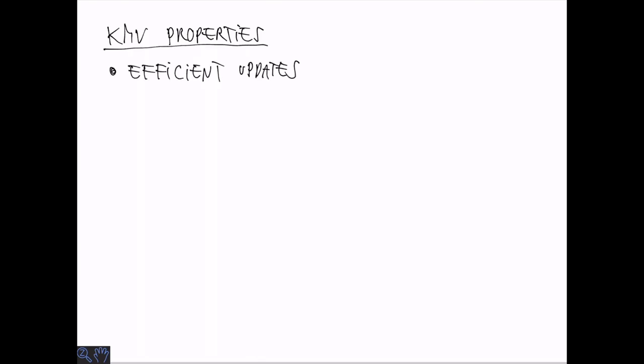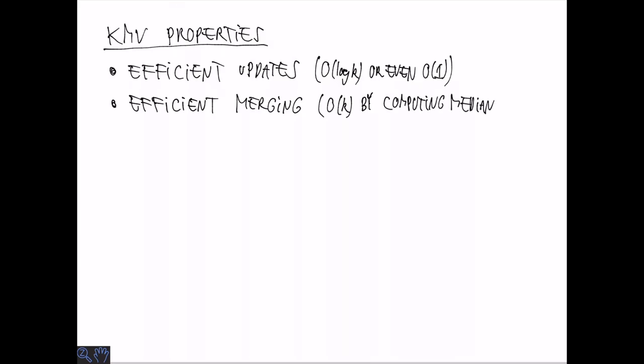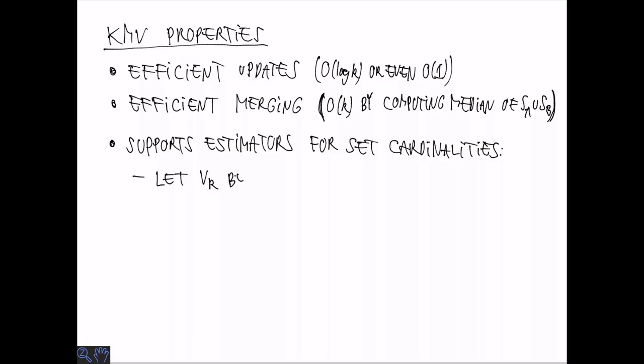What are the properties of KMV? It's easy to see that you can efficiently update it. You can maintain a priority queue and even do smarter things to get logarithmic or even constant time updates. Also, you can merge two KMV summaries in linear time by eliminating duplicates and computing the median. Finally, and this is not obvious, we can take these sketches and estimate the set cardinalities.